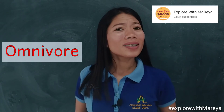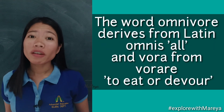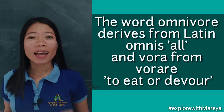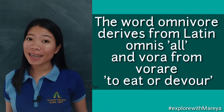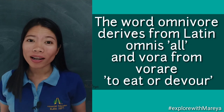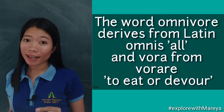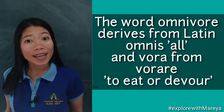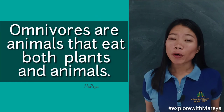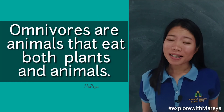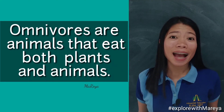Omnivore. What does omnivore mean? The word omnivore derives from the Latin omnis, meaning all, and vorare, meaning to eat and to devour. Omnivores are animals that eat both plants and animals.